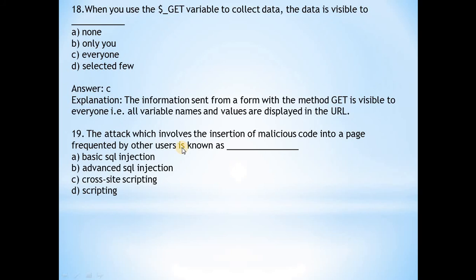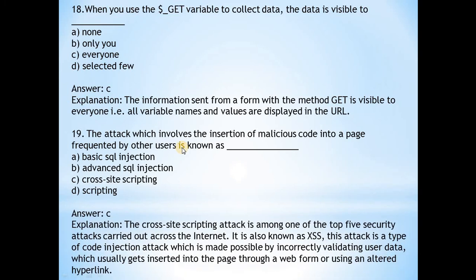Question 19: The attack which involves the insertion of malicious code into a page frequented by other users is known as... Answer is c, cross-site scripting. This is one of the top five security attacks carried out across the internet. It is also known as XSS. This attack is a type of code injection attack which is made possible by incorrectly validating user data, which gets inserted into the page through a web form or using an altered hyperlink.